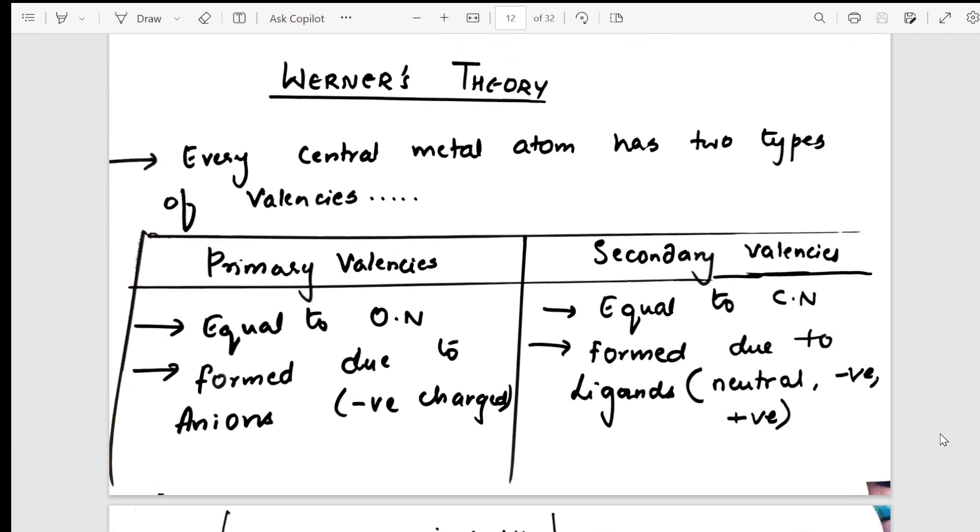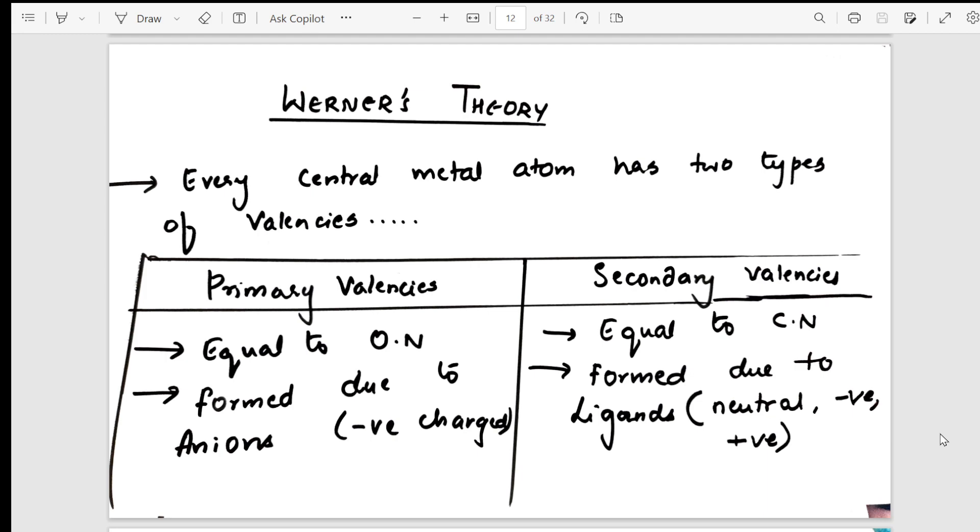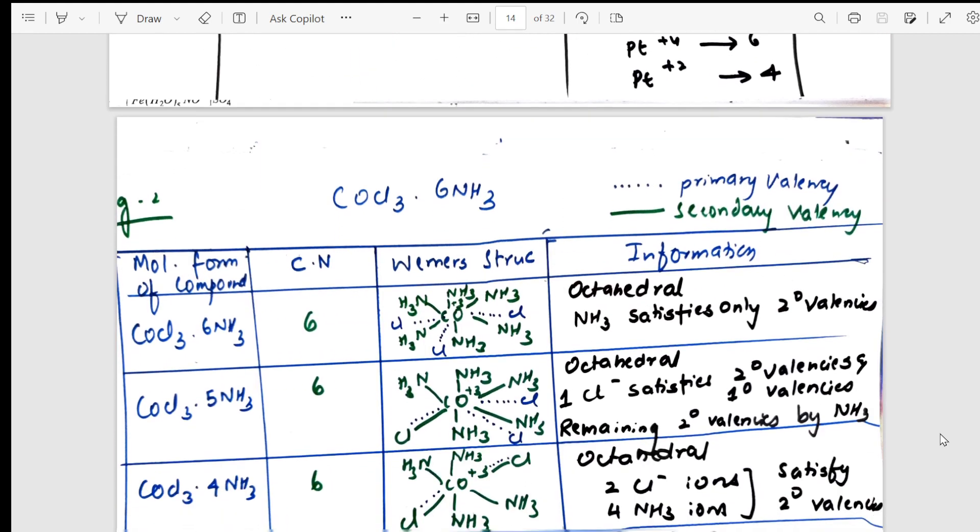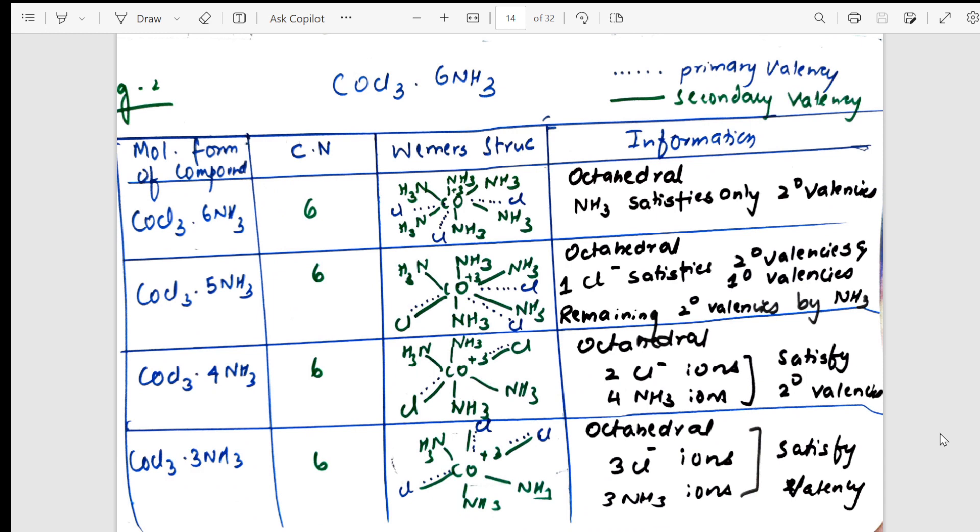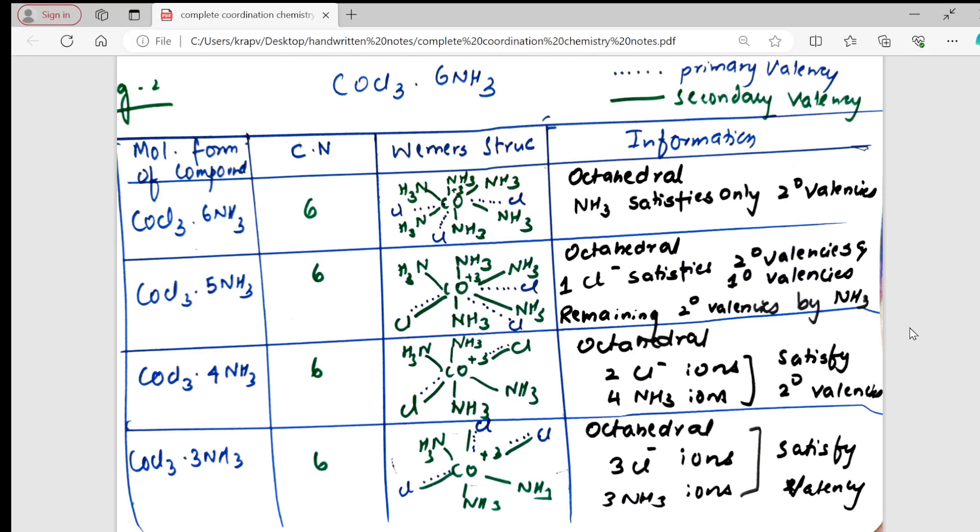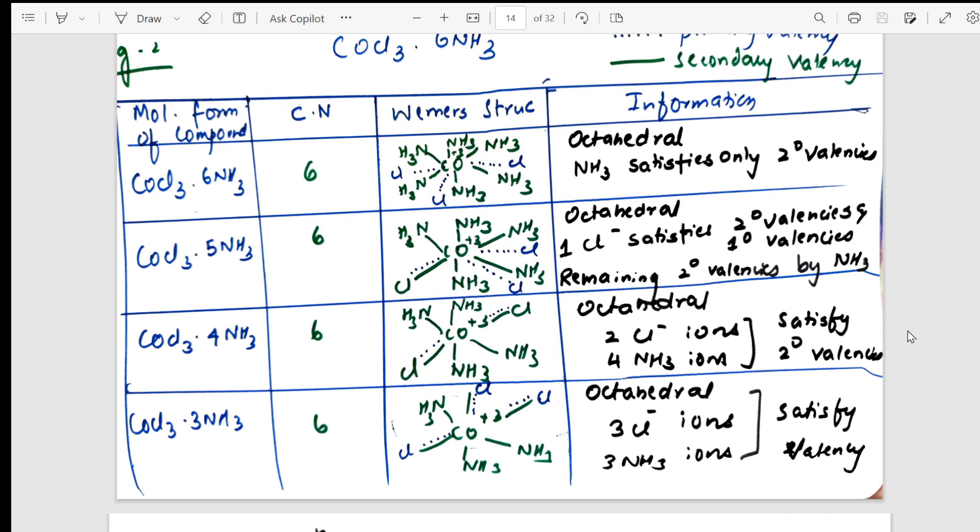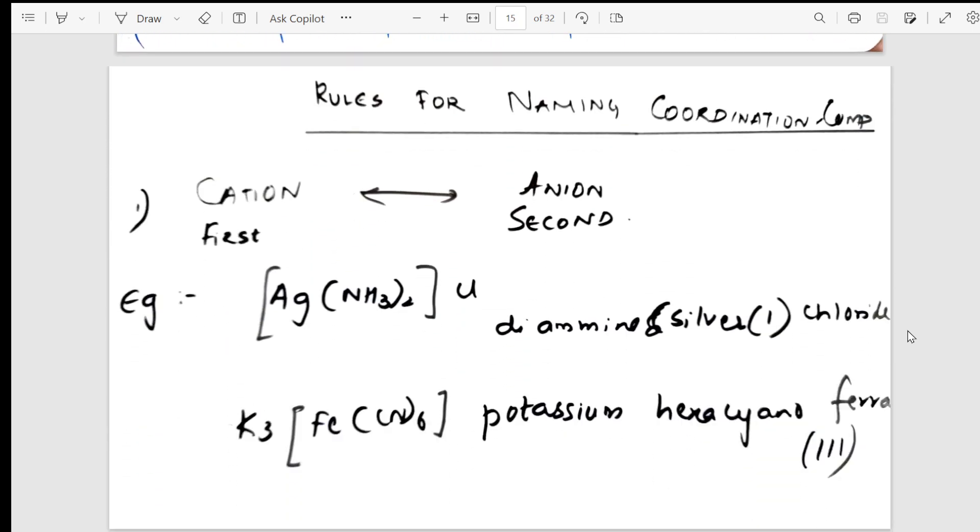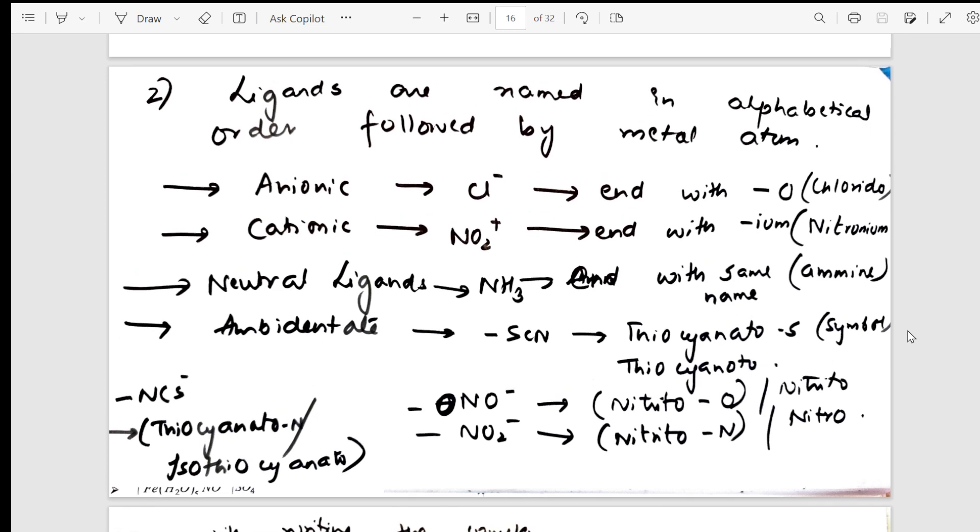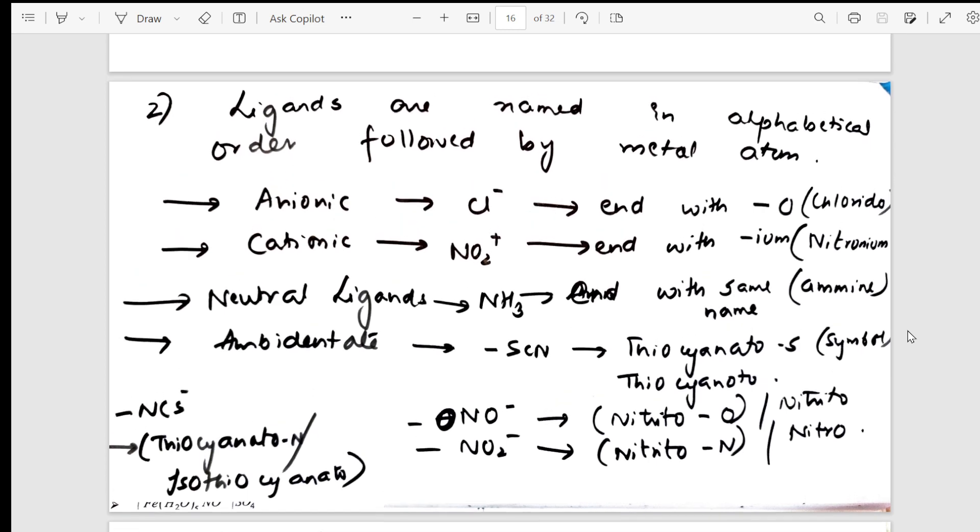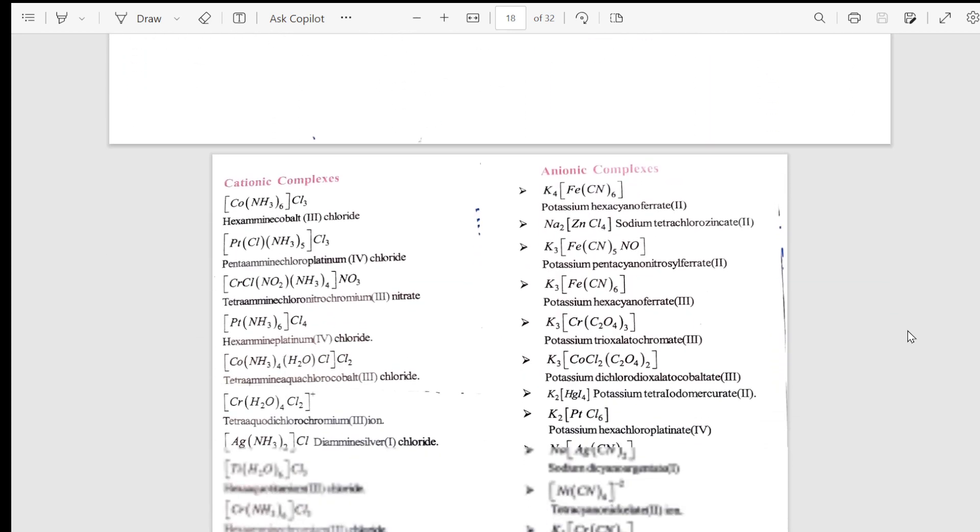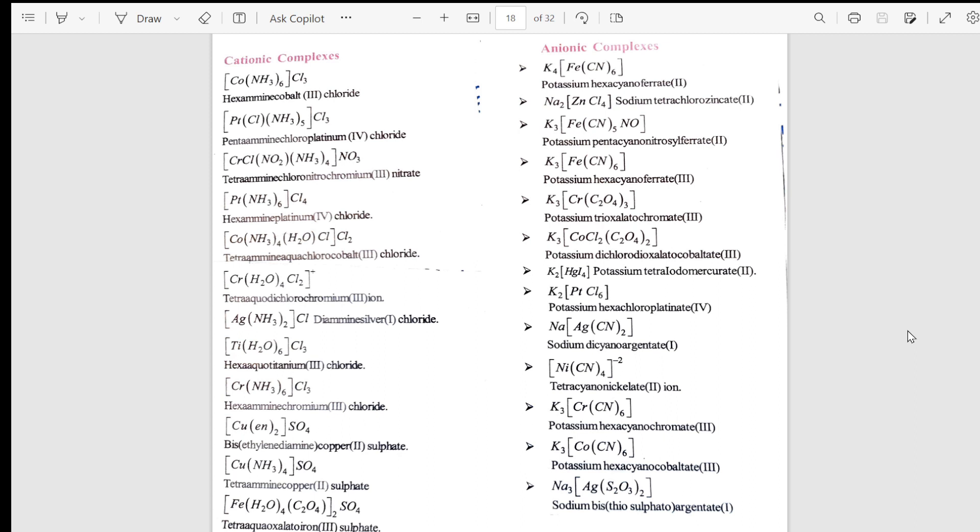Gradually I have taken to Werner's theory, what are the postulates of Werner's theory. From there I have gone further into Werner's theory. Then I have taken the examples for Werner's theory. Based on the examples what he has isolated, we have given the particular Werner's structure, what is primary valency, what is secondary valency. From there I've gone to the rules for naming coordination compounds. Very important, you'll be getting one question from this. Then ligands, what are the different types of ligands, what are the rules for writing the complexes, and different examples which they give you in the board exam - cationic complexes, anionic complexes.